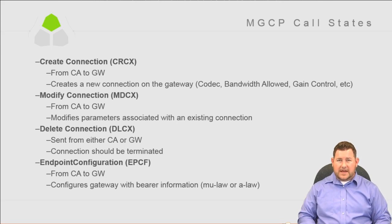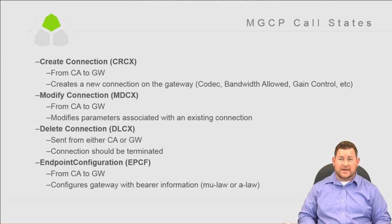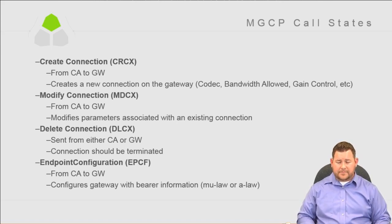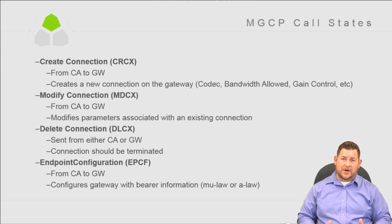Endpoint Configuration is from Communications Manager to the gateway and configures the gateway with bearer information — such as mu-law or a-law, meaning G.711 mu-law or G.711 a-law. It tells the gateway to configure itself with that type of information to process calls.